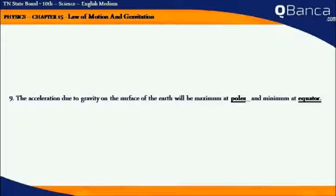Acceleration due to gravity on the surface of the Earth will be maximum at poles and minimum at equator.